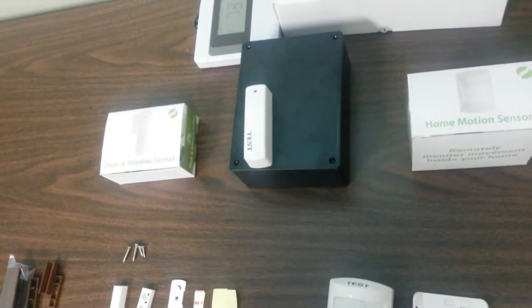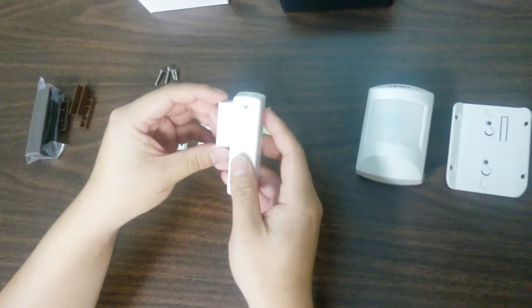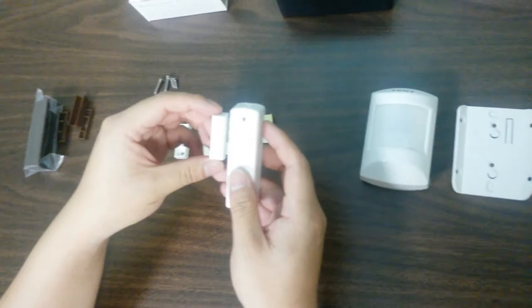Now that the sensor has been included into the hub, we're going to test it. By putting the magnet next to the sensor and pulling it apart, you'll see the red light flash. That means that the sensor is working properly.